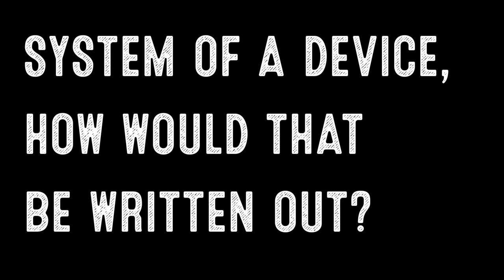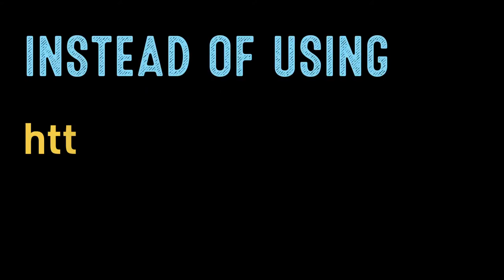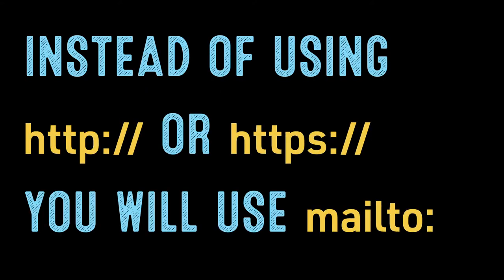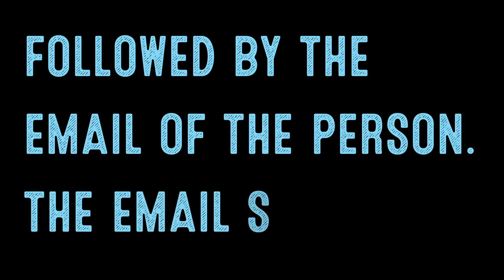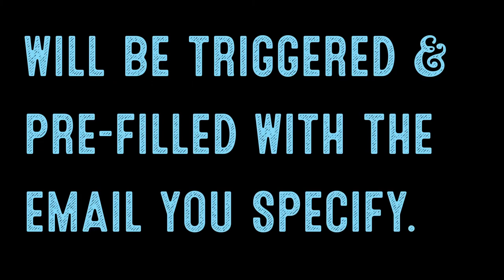If we wanted to create a link to trigger the email system of a device, how would that be written out? Instead of using HTTP:// or HTTPS://, you will use mailto: followed by the email of that person. The email system will be triggered and prefilled with the email you specify.